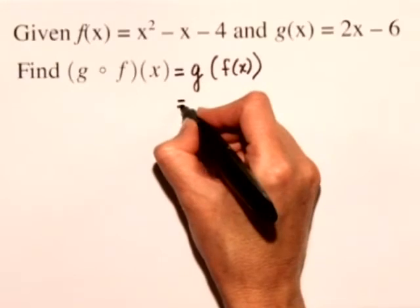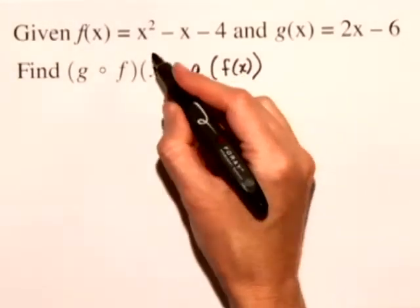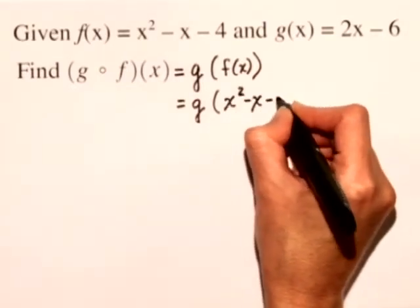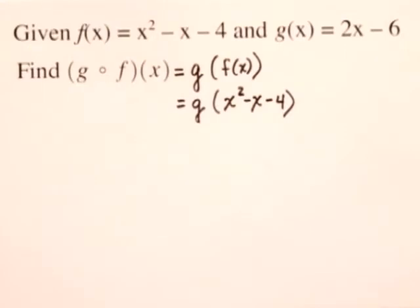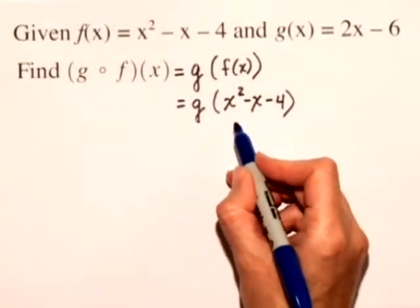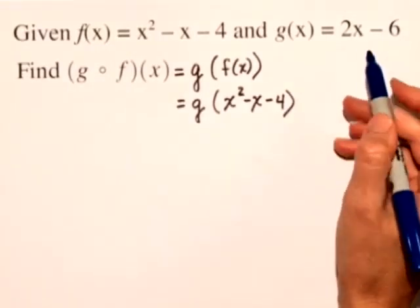So this is really equal to g of whatever f of x is. In this case, it's x squared minus x minus 4. This means we'll substitute x squared minus x minus 4 everywhere we see an x in g of x.